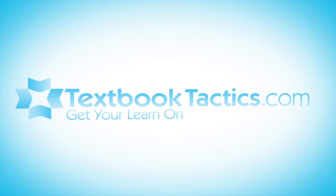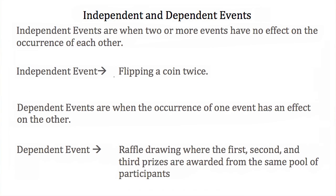This is a tutorial on independent and dependent events. Independent events are when we have two or more events and they have no effect on the occurrence of each other. An example of an independent event is flipping a coin twice.